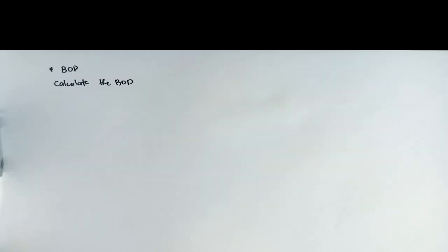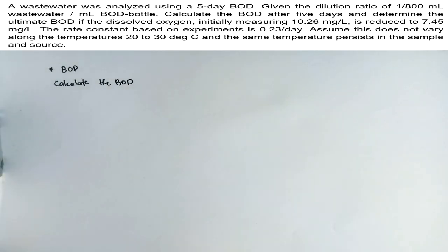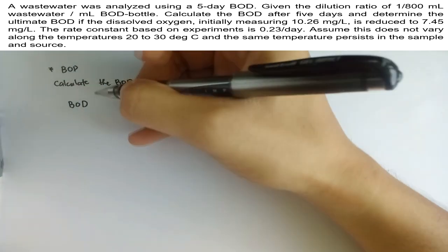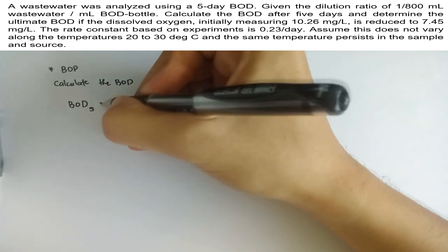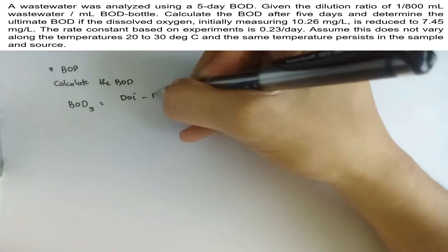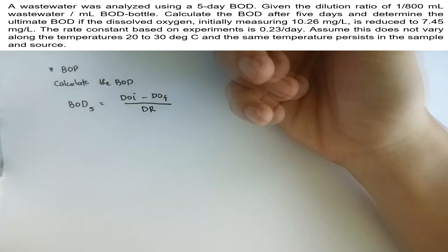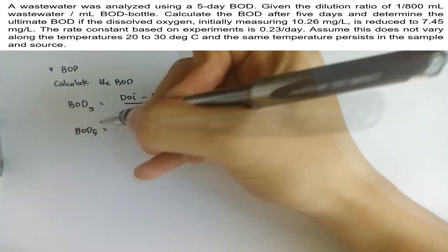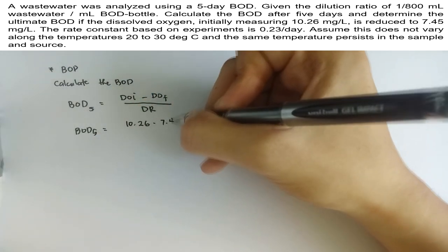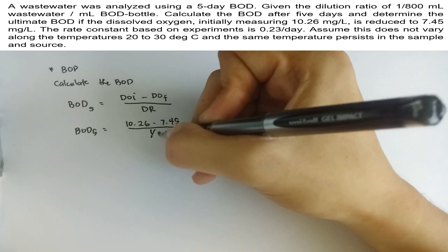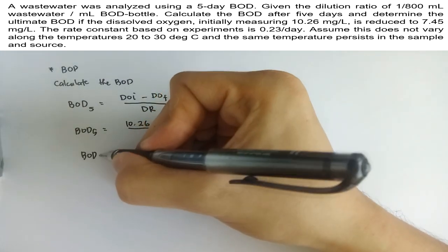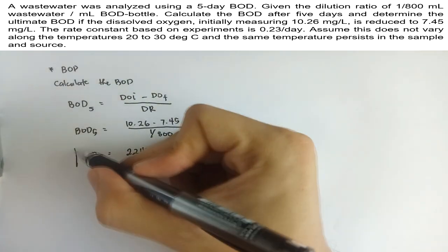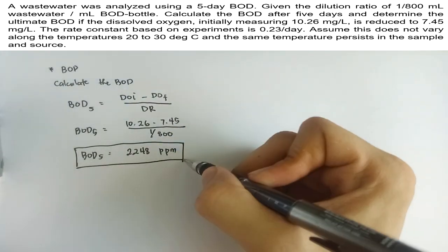The formula for BOD is given by the BOD-5 formula. This is equal to the initial dissolved oxygen minus the final dissolved oxygen divided by the dilution ratio. This is a very easy and direct substitution problem. BOD-5 is equal to 10.26 minus 7.45 divided by 1 over 800. This is equal to 2,248 mg per liter or simply 2,248 ppm. Therefore, the 5-day BOD is 2,248 parts per million.